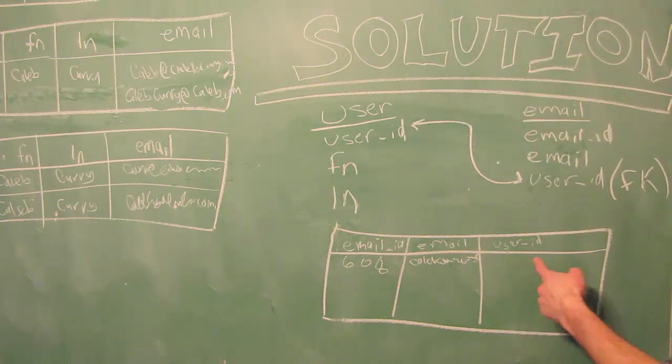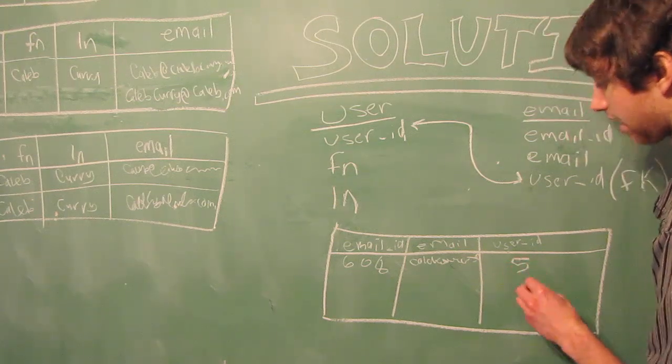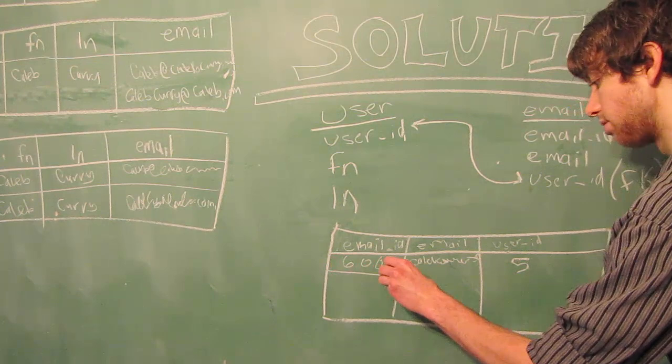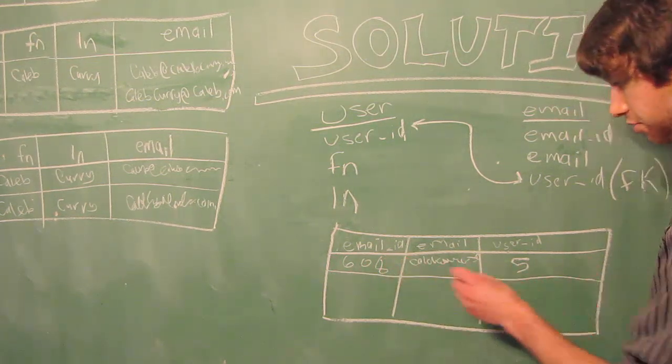Then the user ID of who owns that, which in this case would have been 5, because 5 was the ID that was used for this user. This would be our first row.